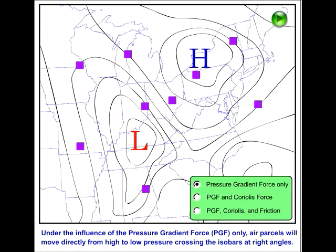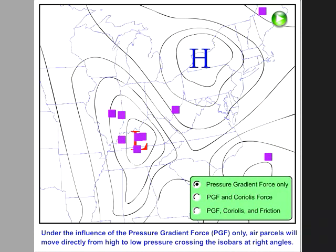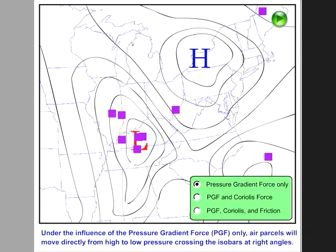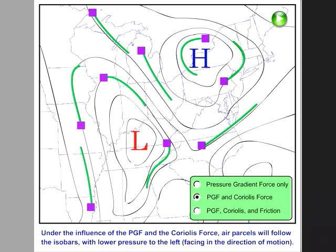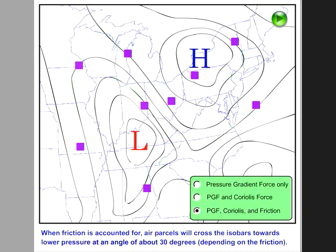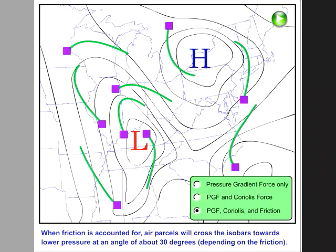Here is one more illustration showing you the forces affecting the movement of air parcels. If there is only pressure gradient force, the parcels will move straight towards the low pressure system. If there is pressure gradient and Coriolis force, the parcels will move along the isobars. Pressure gradient, Coriolis and friction causes the air parcels to move across the isobars at an angle toward the low pressure.